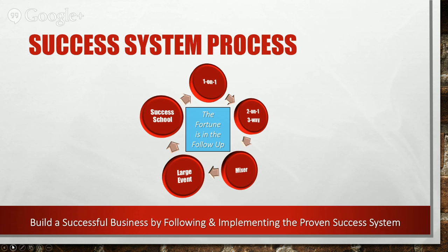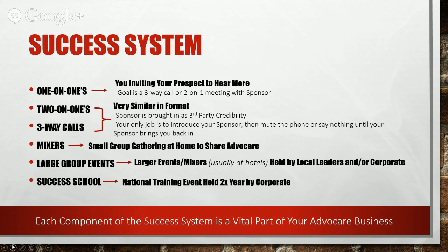In a one-on-one, you're just inviting your prospect to hear more. Your goal is to get a three-way call or two-on-one meeting with your sponsor — that's it. Once you've shared your story and they're interested, you need to say 'Here's what we do next: I'm going to get you on the phone with my buddy Matt — he's been helping me and will be able to help you too and answer questions.' Then invite them to that next step.